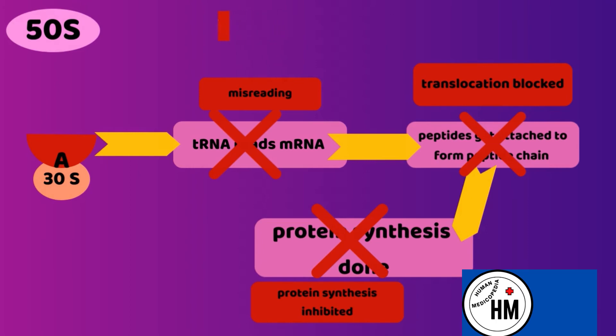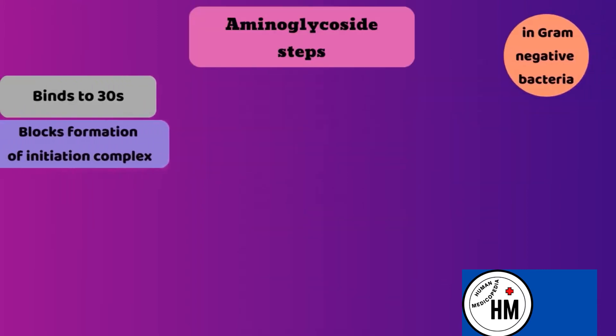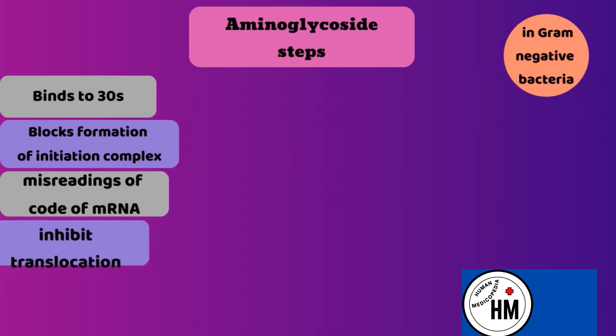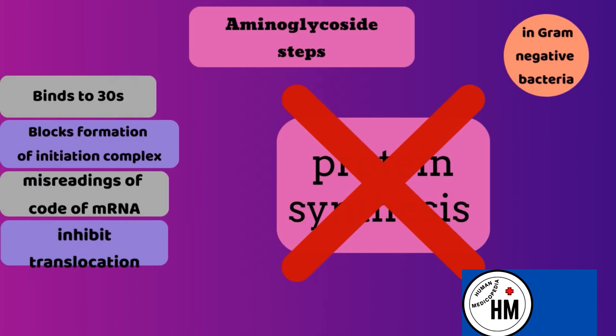In summary, the steps of the mechanism of action of aminoglycosides in gram-negative bacteria are: binds to 30S, blocks formation of the initiation complex, causes misreading of messenger RNA, inhibits translocation, and eventually protein synthesis is inhibited.